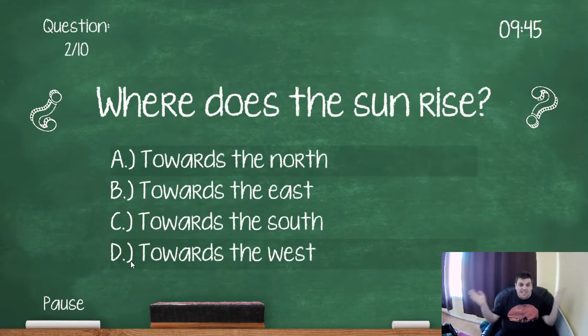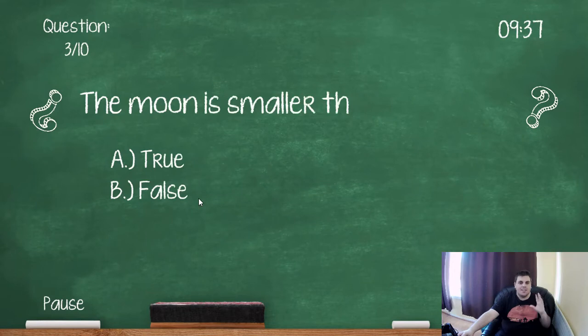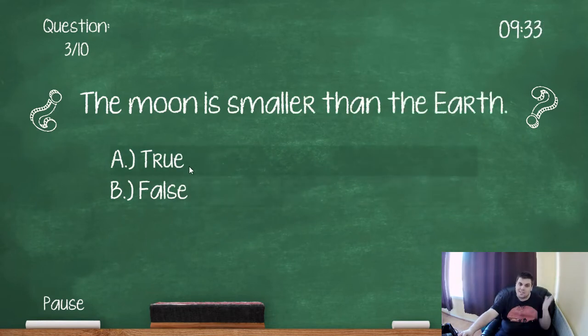Where does the Sun rise? It rises in, never eat shredded wheat, to the east. The moon is smaller than the earth. It's true it is smaller because it's a satellite.